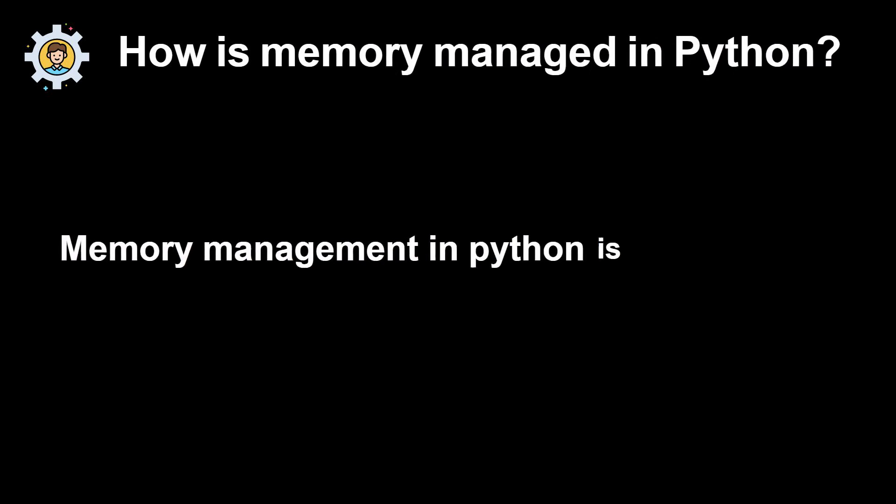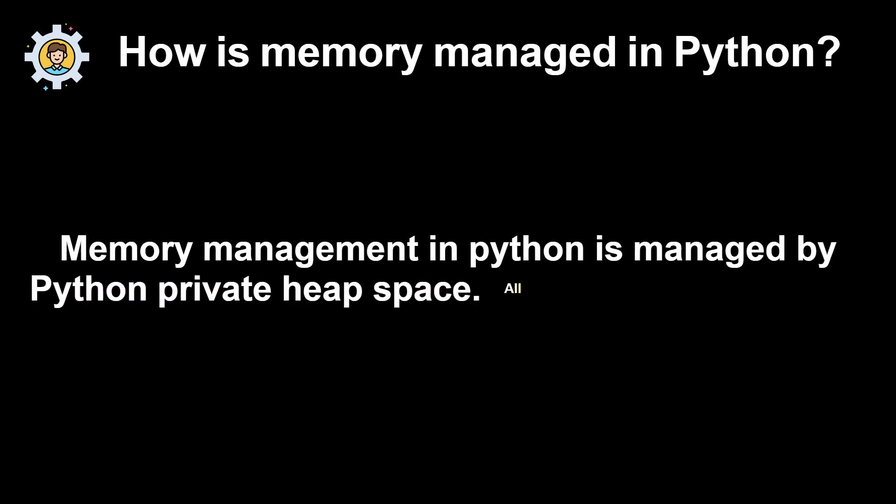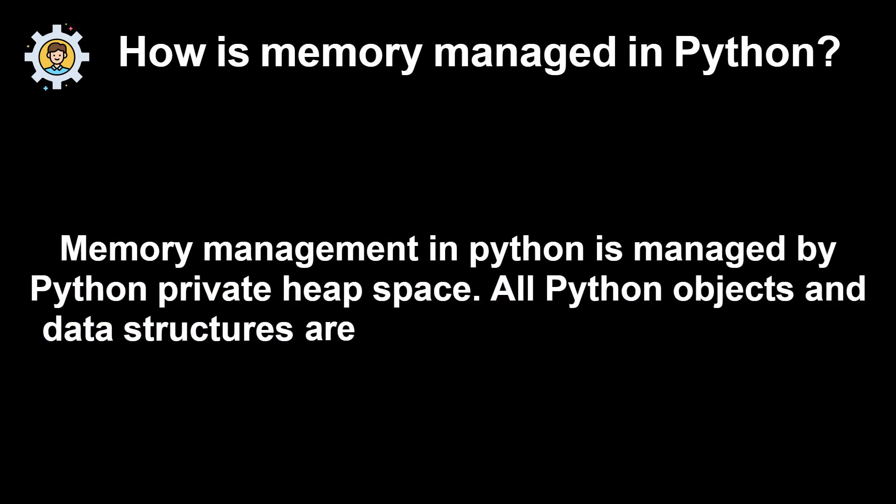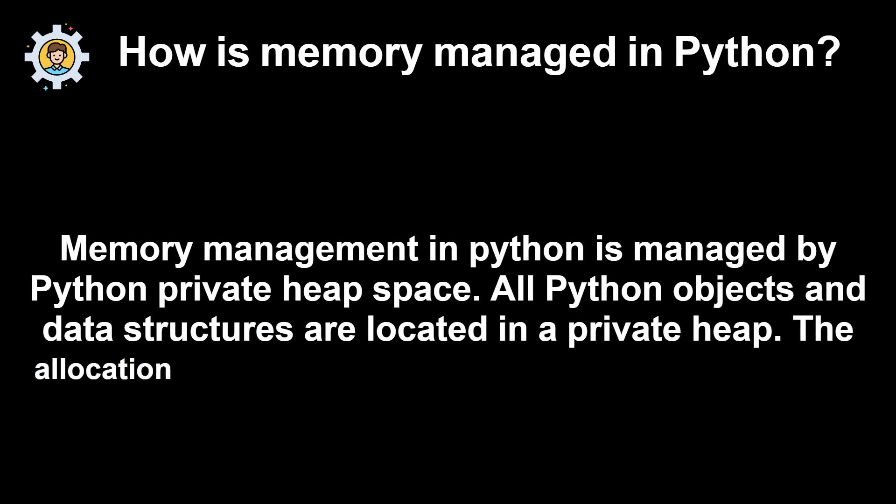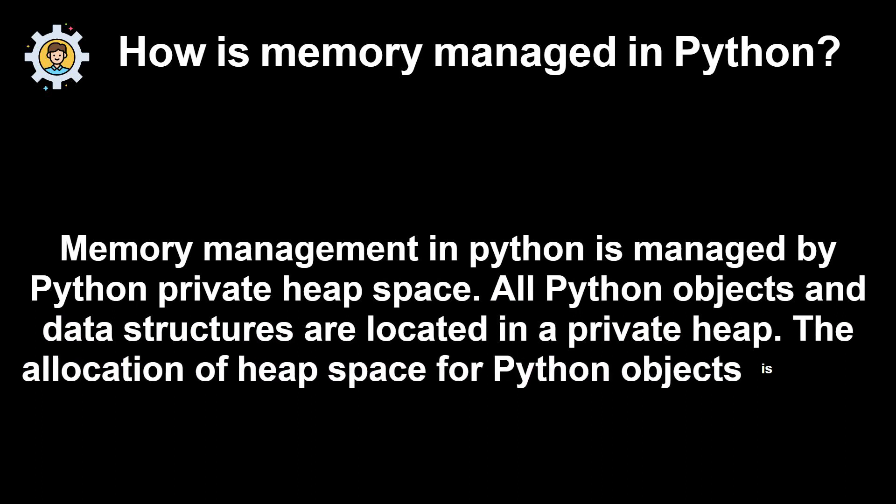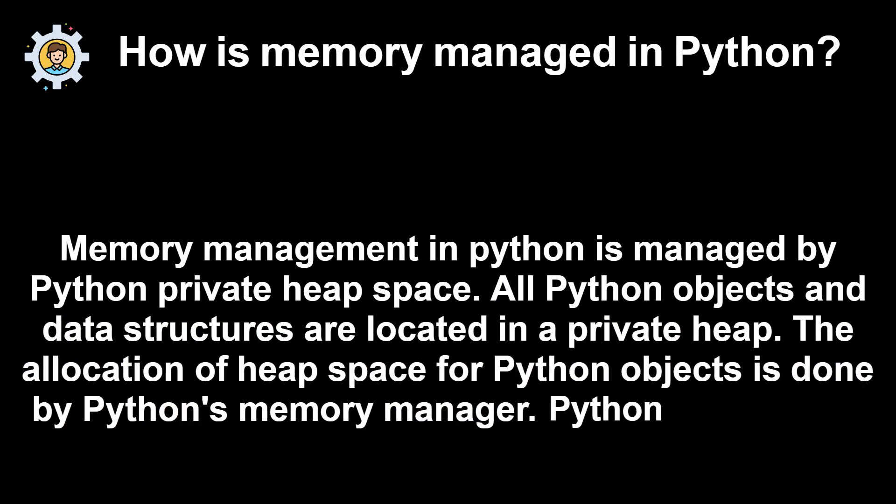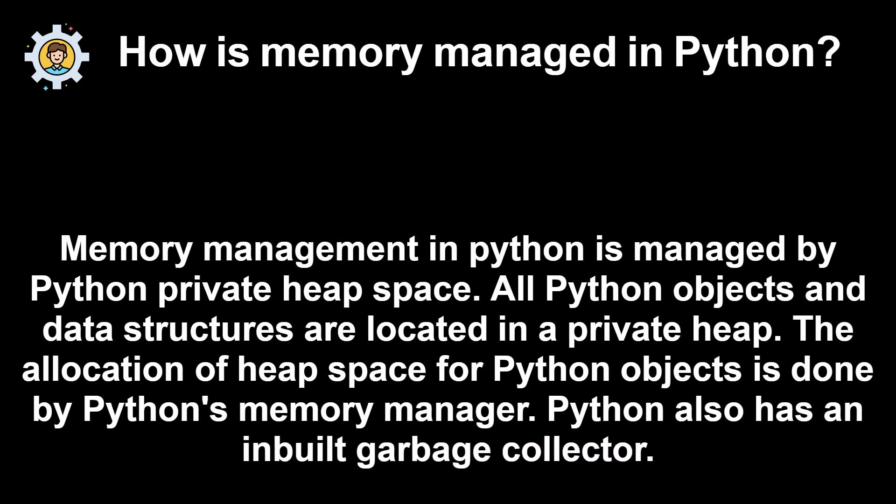How is memory managed in Python? Memory management in Python is managed by Python private heap space. All Python objects and data structures are located in a private heap. The allocation of heap space for Python objects is done by Python's memory manager. Python also has an in-built garbage collector.